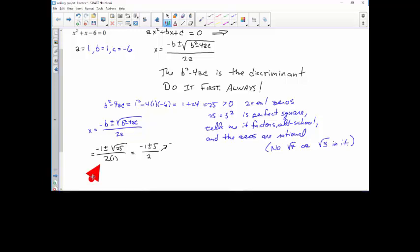So -1 + 5 divided by 2 is 4 over 2 which is 2. And -1 - 5 over 2 is -6 over 2 equals -3. So x is in this set.